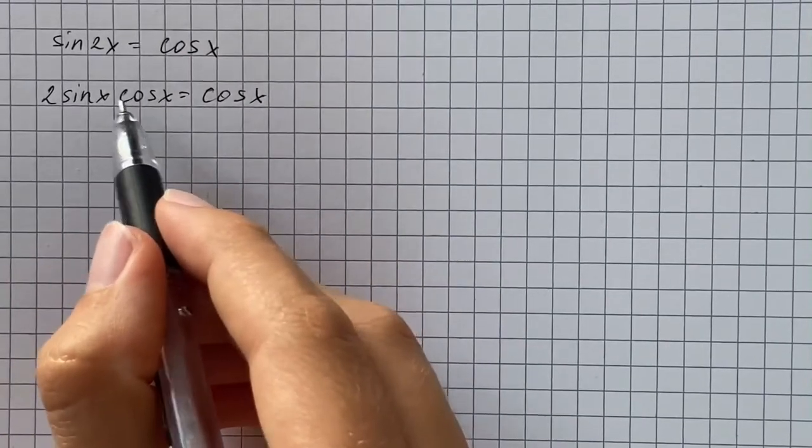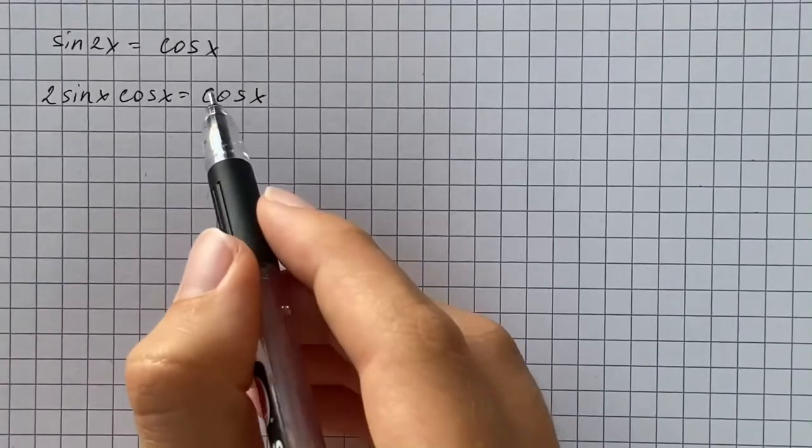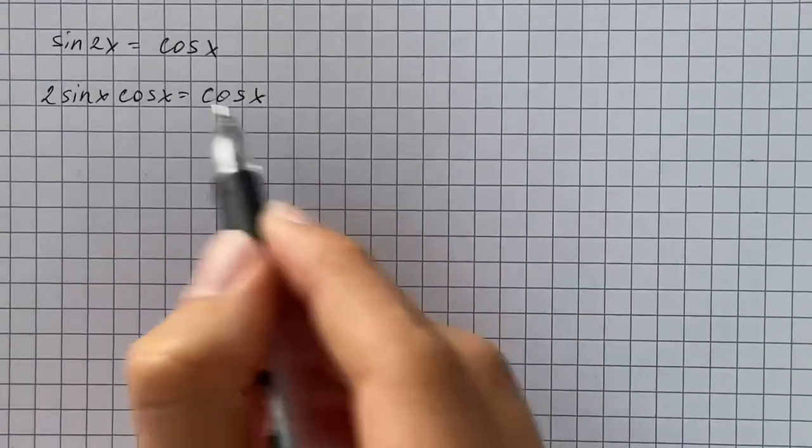So it would be a mistake to divide both sides by cosine of x because then we will lose some of the solutions where cosine of x equals 0.